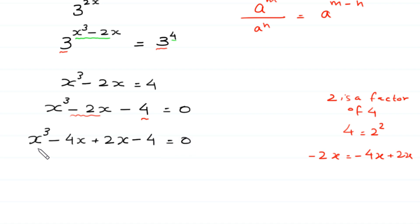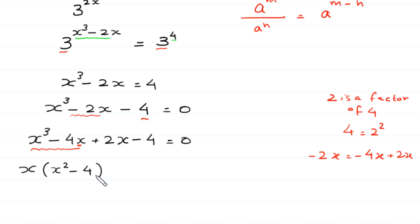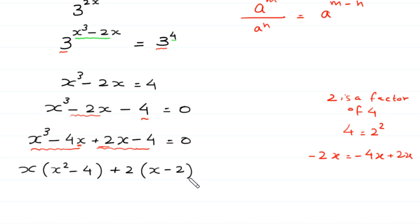From the first two terms x cubed minus 4x, we can factor out x, giving x times (x squared minus 4). From the remaining two terms plus 2x minus 4, we factor out plus 2, giving 2 times (x minus 2), equal to 0.